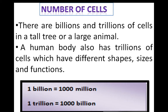In our bodies, as in plants, there are billions and trillions of cells. A human body has trillions of cells, which have different shapes, sizes and functions. One billion equals a thousand million, and one trillion equals a thousand billion — so multiply and think about how many cells we have in our body.